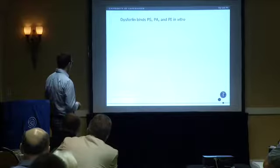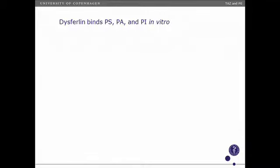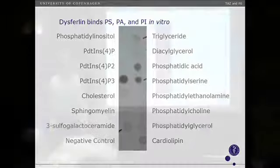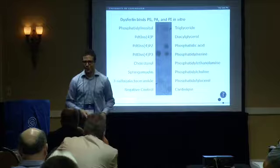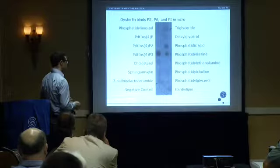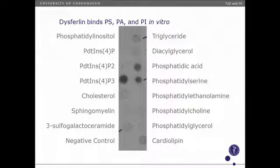Just to prove that dysferlin binds to PS — this has been shown before, but we thought it important to do in our own hands — and by our own hands, I mean Michelle's hands. As you can see, it binds PS, also PA, and phosphatidylinositol. So: we have decreased PS in heart, decreased PS in muscle, PS binding to dysferlin, which is mutated in two types of muscular dystrophy.